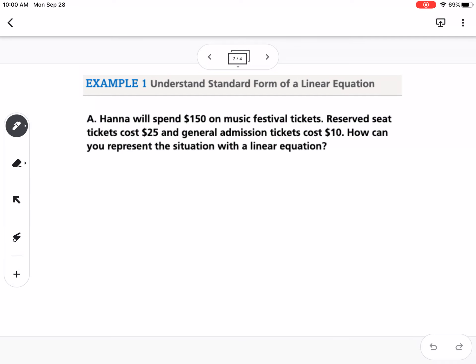Our first example says that Hannah will spend $150 on music festival tickets. Reserved seat tickets cost $25, and general admission tickets cost $10. How can you represent the situation with a linear equation?